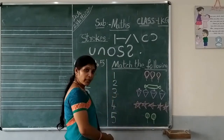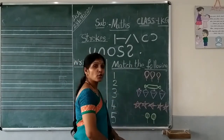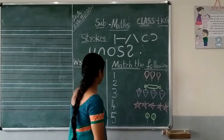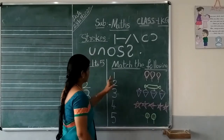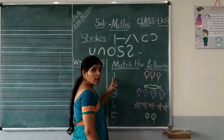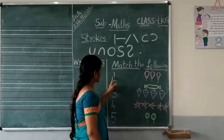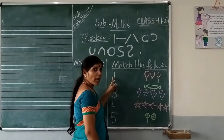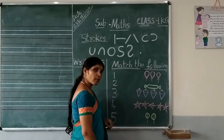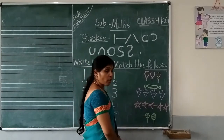Children, what we should do here? We should match the numbers with suitable objects. Come on children, let's match. Which number is? This is number 1. How many objects here to match? Only 1 object. Come on children, next. This is the 1 object.